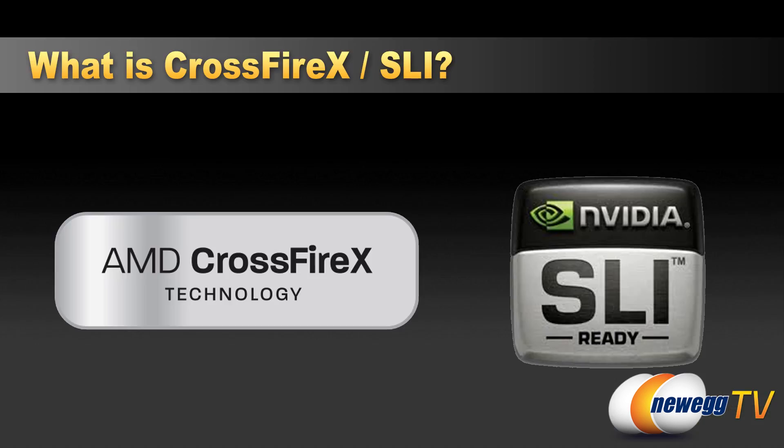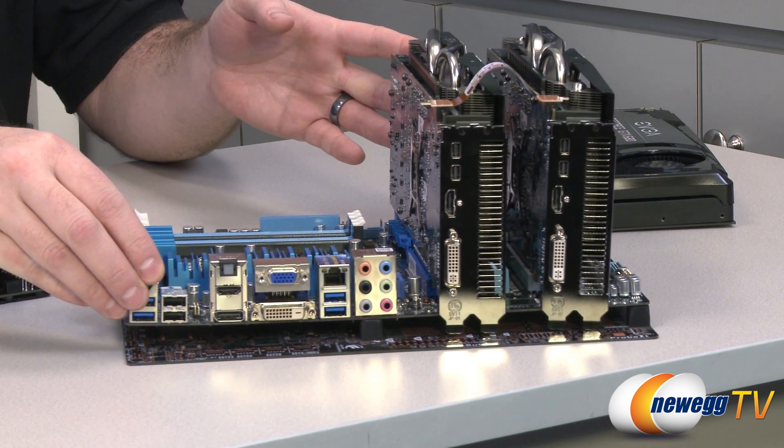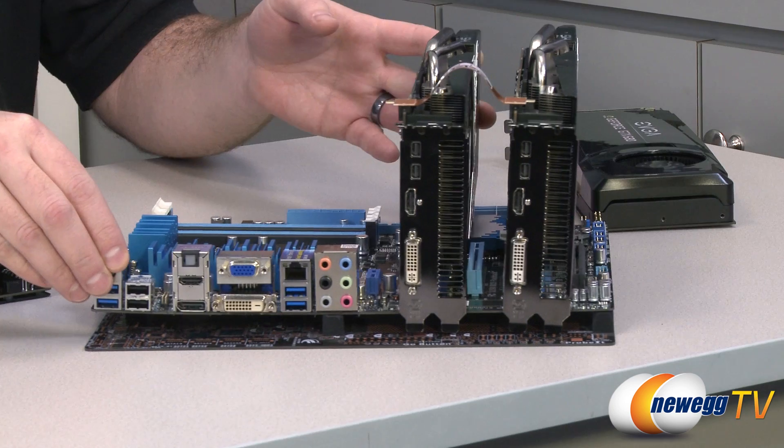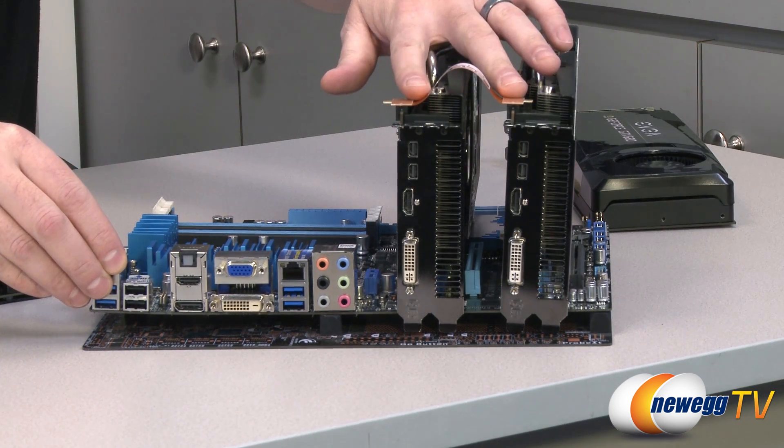So what is Crossfire X? Crossfire X for AMD video cards and the NVIDIA equivalent SLI is a system that allows two or more GPUs, or graphics processing units, to work together to render the same video stream. Ideally, the goal is to double, triple, or quadruple graphics rendering performance depending on how many GPUs you are using. Once it's set up, it should be a seamless process no different than using a single graphics card.